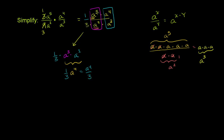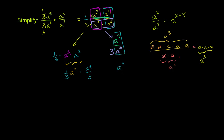The other approach is to add exponents in the numerator first, then in the denominator. In the numerator, a to the fifth times a to the fourth is a to the ninth. In the denominator, a squared times a to the third is a to the fifth — and we still have the 3 in the denominator. Applying the quotient rule: a to the ninth over a to the fifth equals a to the 9 minus 5, or a to the fourth. Divided by 3 — either way, we get the same answer.